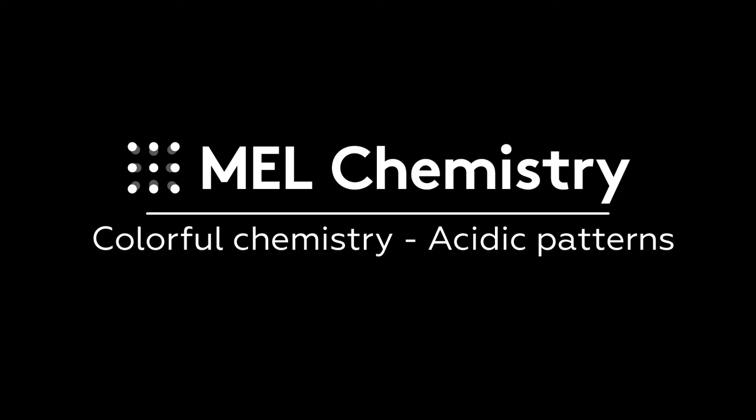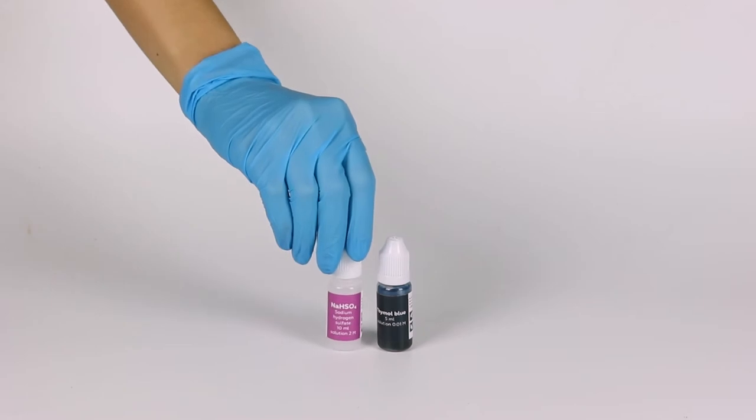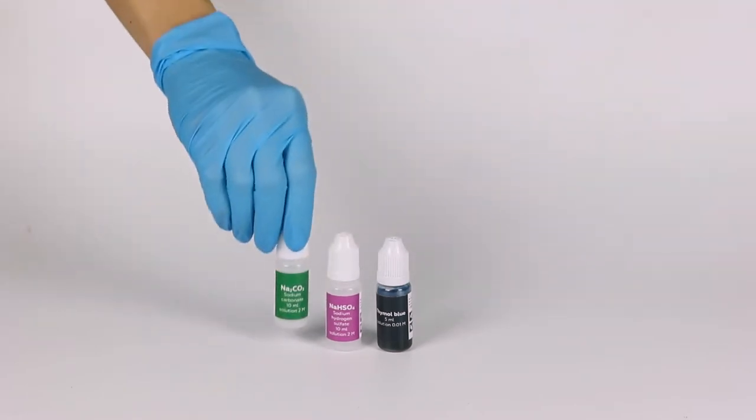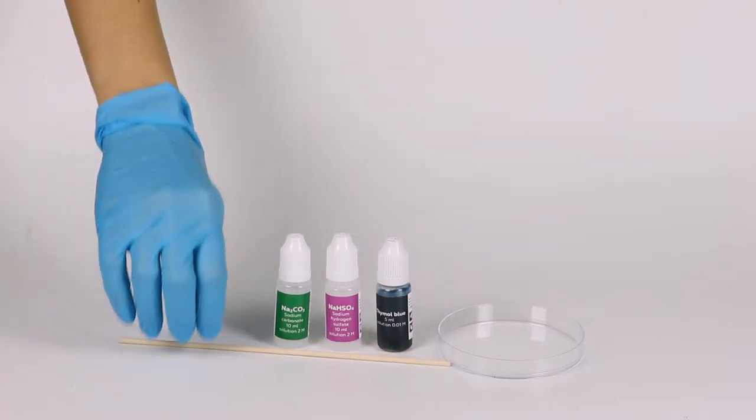For the acidic patterns experiment, you will need solutions of thymol blue, sodium hydrogen sulfate, and sodium carbonate, a petri dish, a wooden stick, and some water.